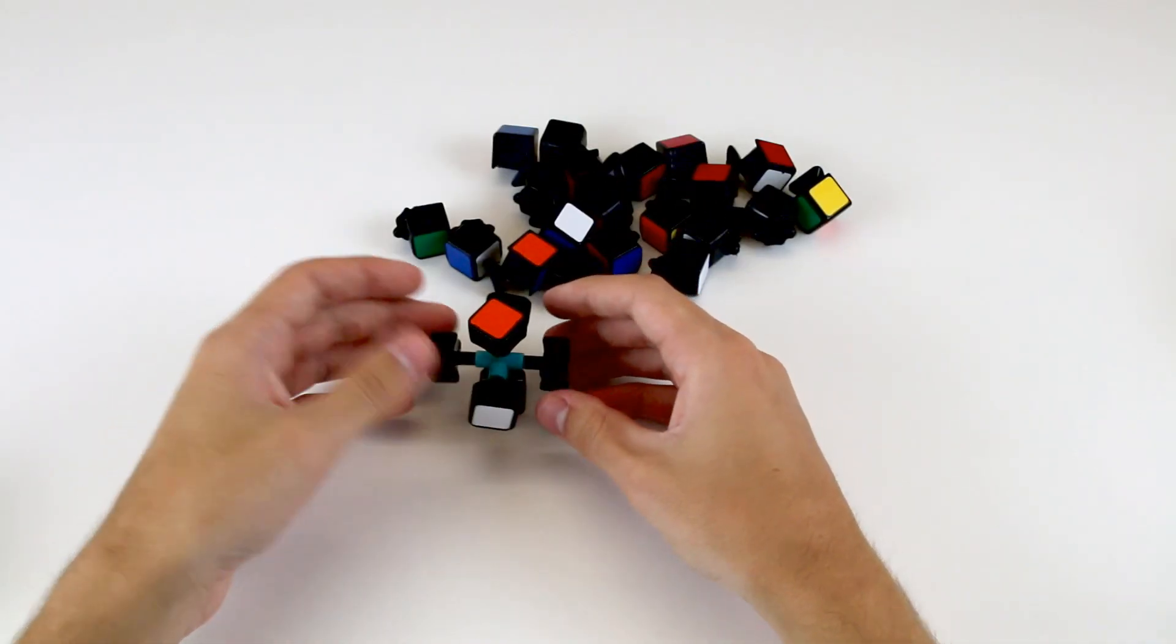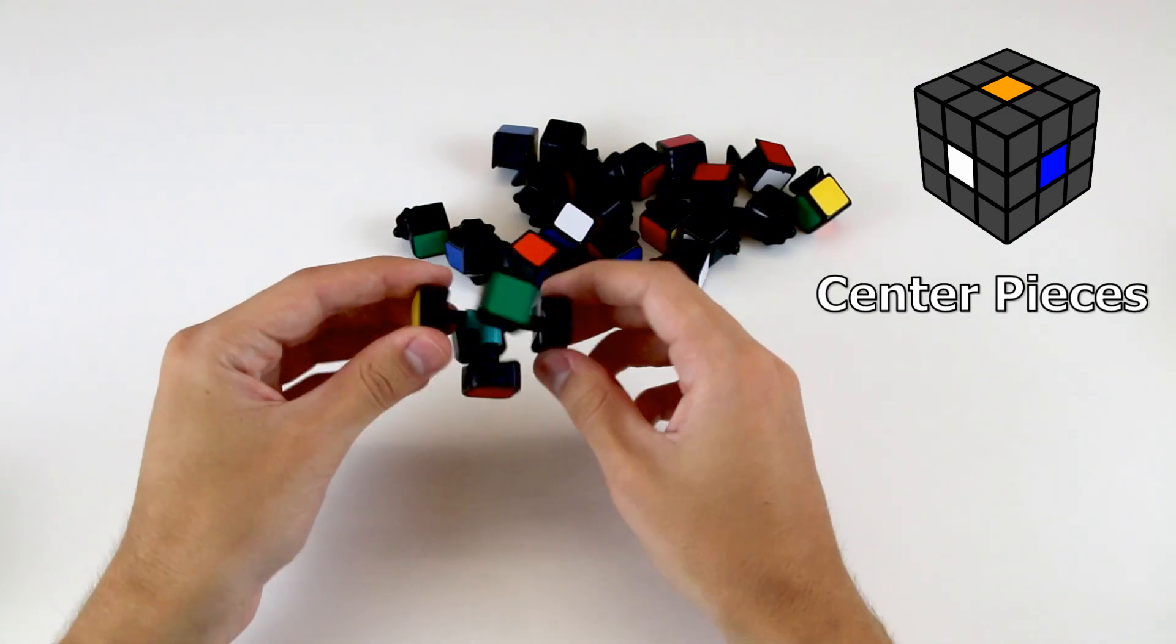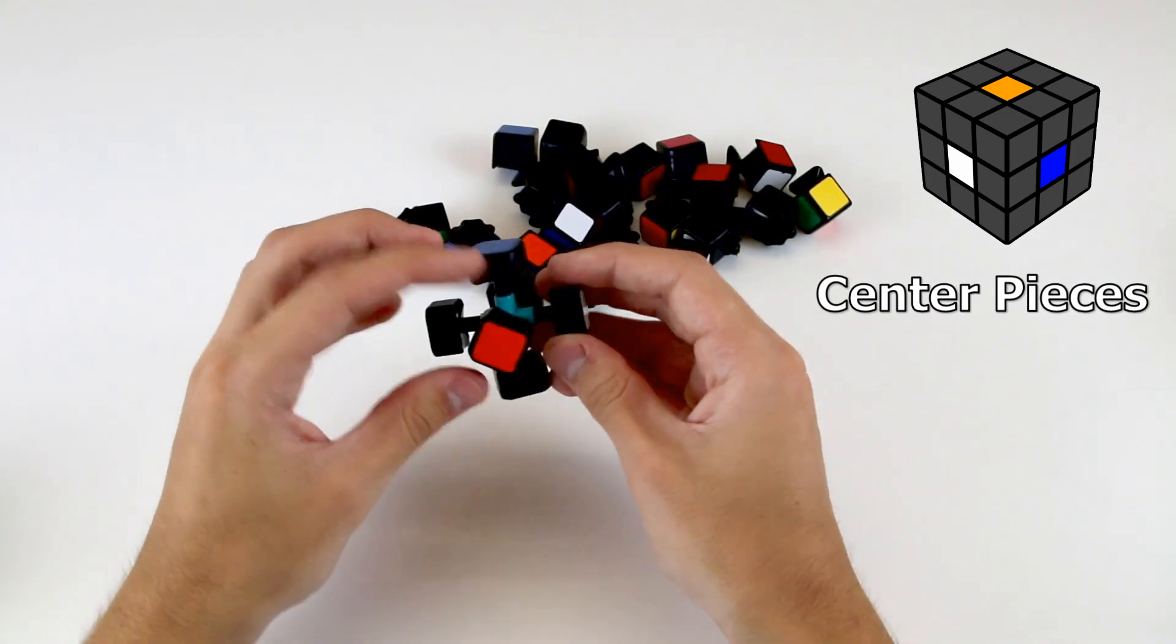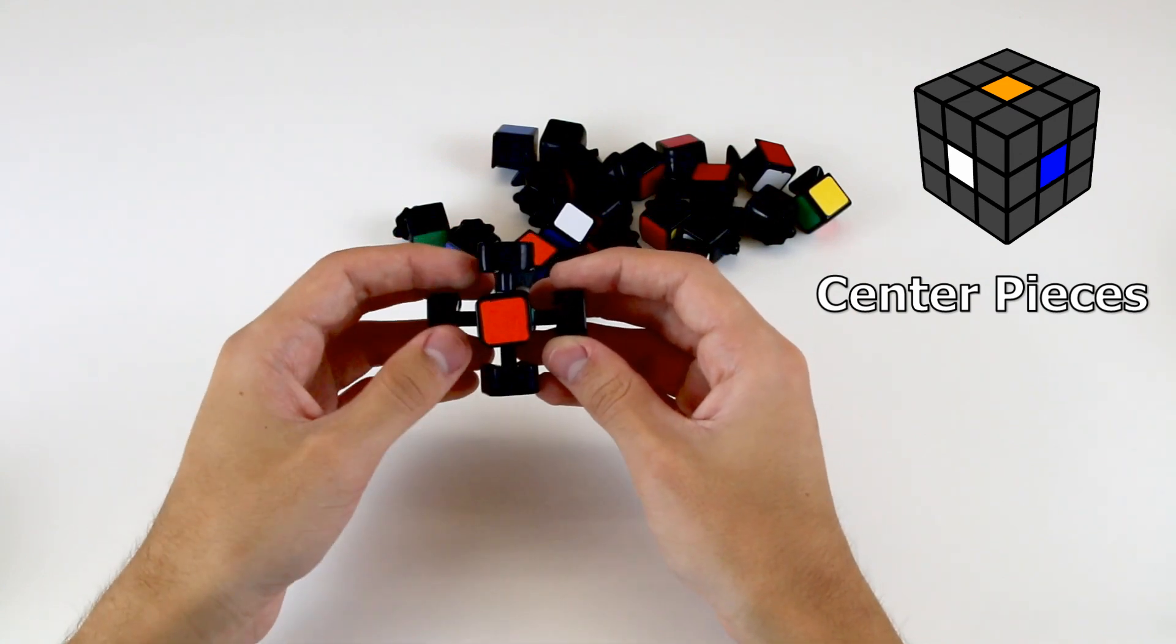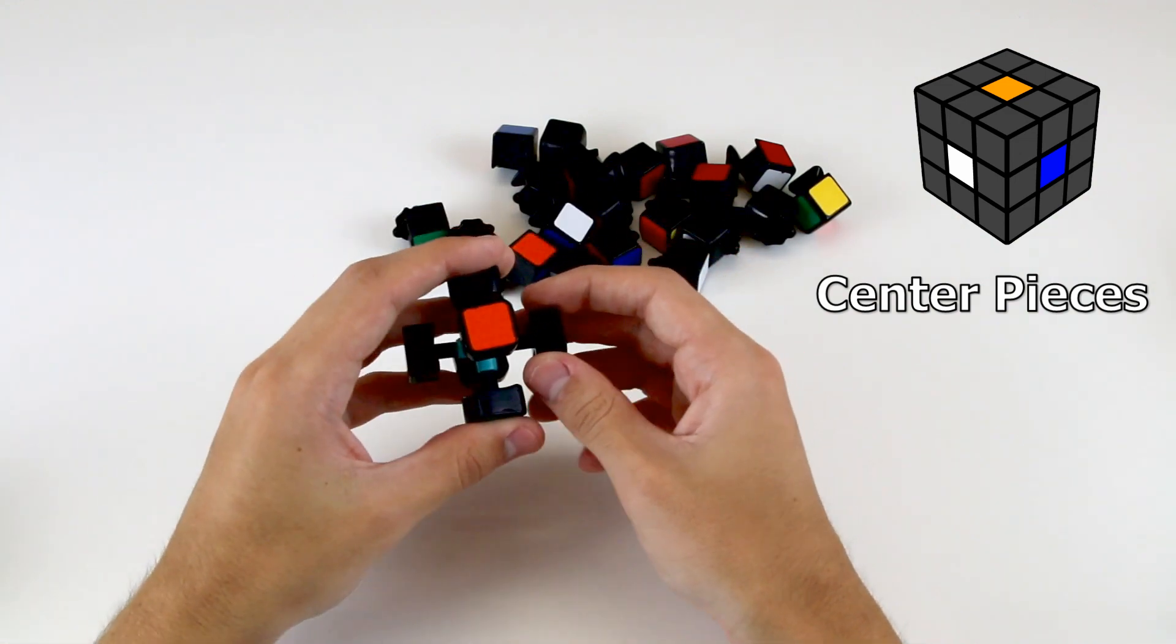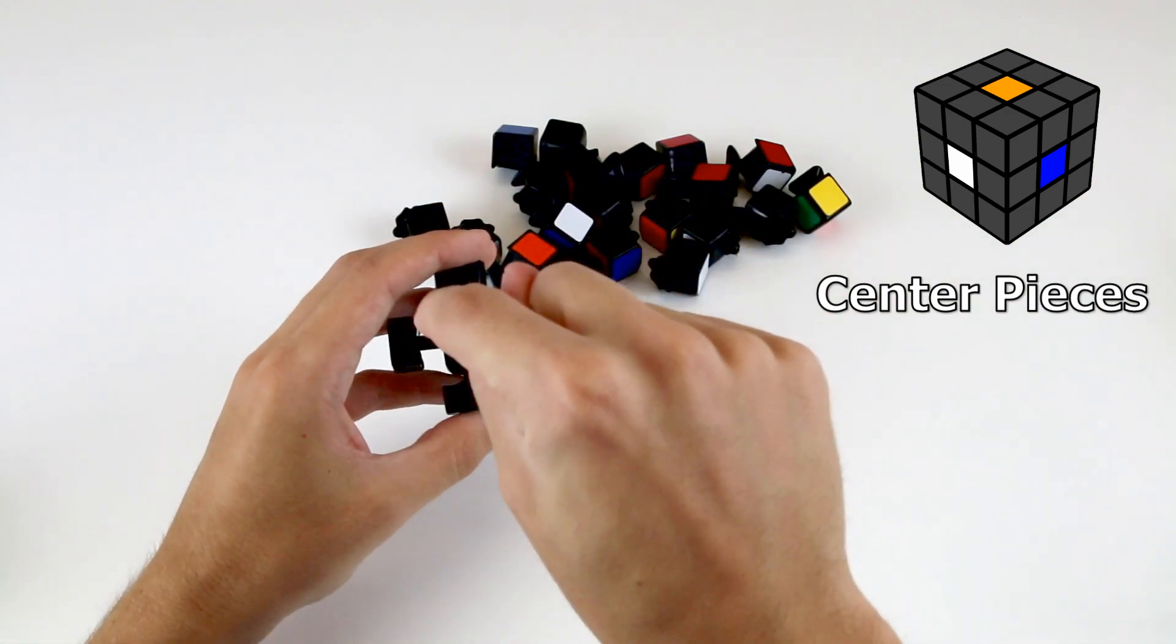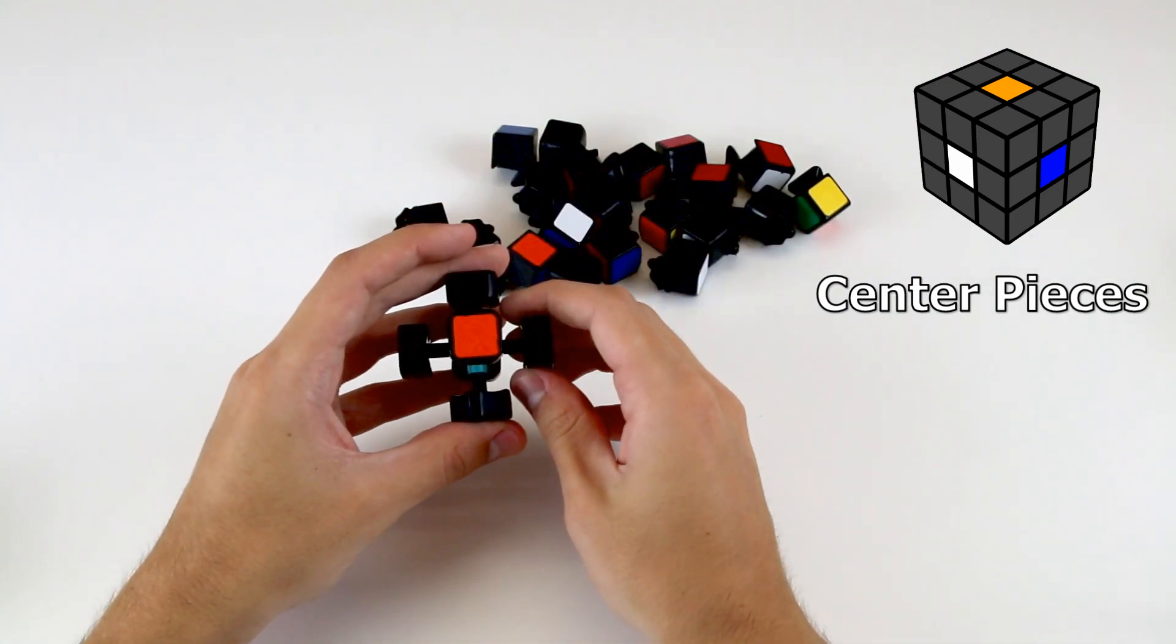The first type of pieces are the center pieces, and there are six of those. These are the pieces that lie in the middle of each side of the cube. The center pieces are fixed in relation to one another, and denote the color of the particular side of the cube. That is to say, if you have a scrambled Rubik's Cube, and look at the location of, for example, the orange center piece, that is where the orange side will be once the cube is solved.